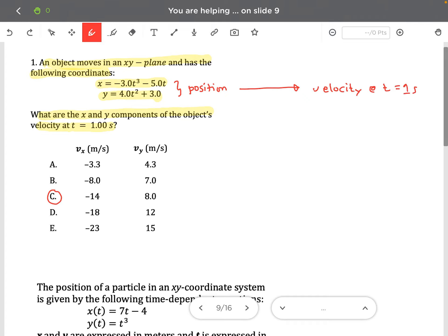So what we need to do is to derive the position function, or apply the rules of derivative to obtain the velocity.